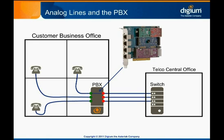Each connected analog circuit is treated as a single port on the interface card. So in the simple example where one phone connects through the PBX to one phone line, two ports are actually necessary. As we'll see in the next slide, there are different types of analog ports as well.